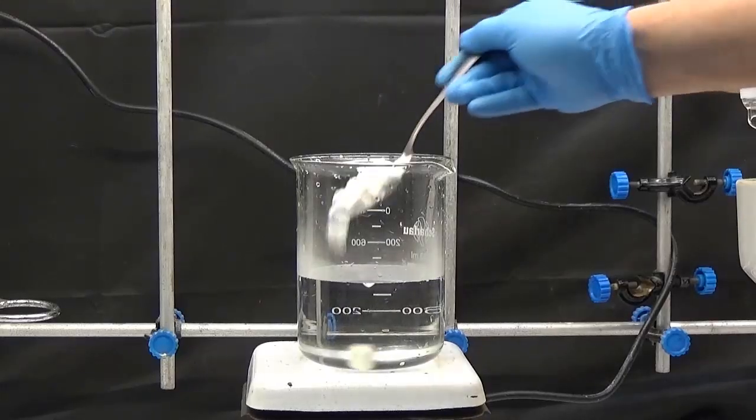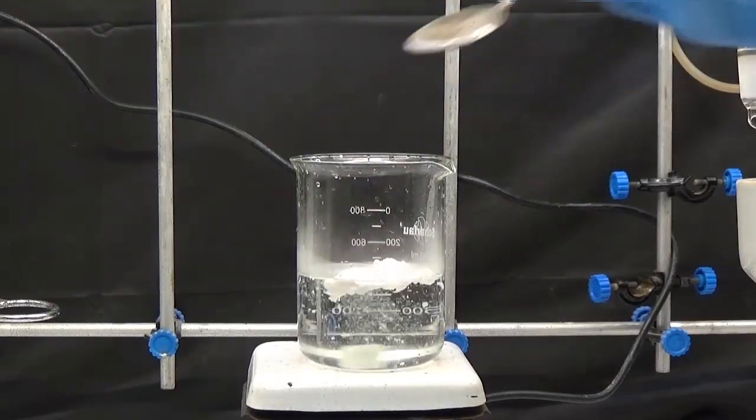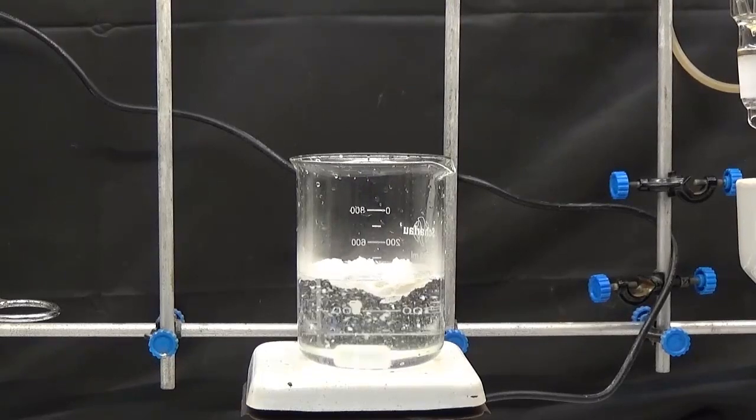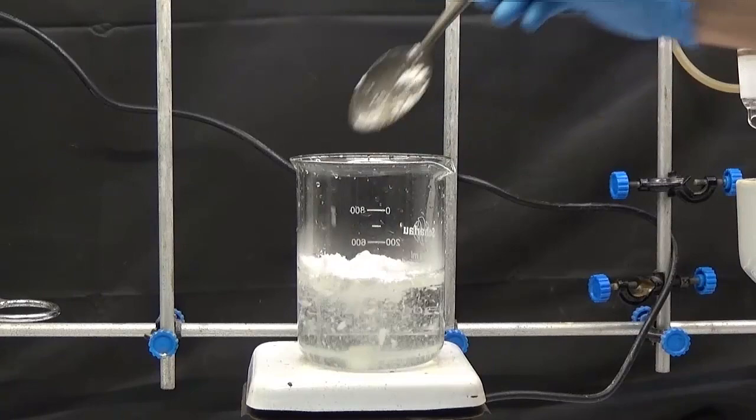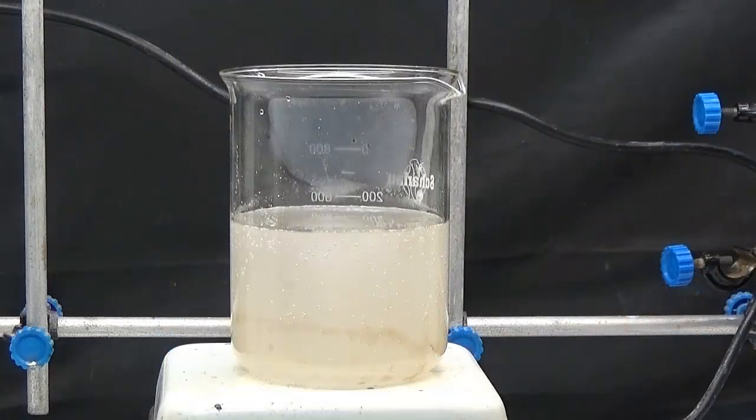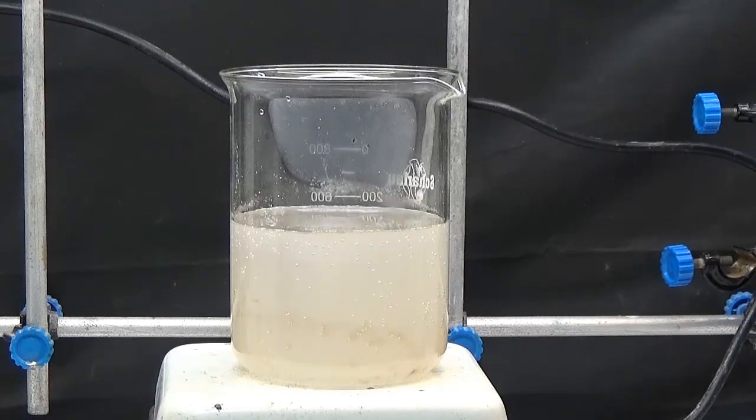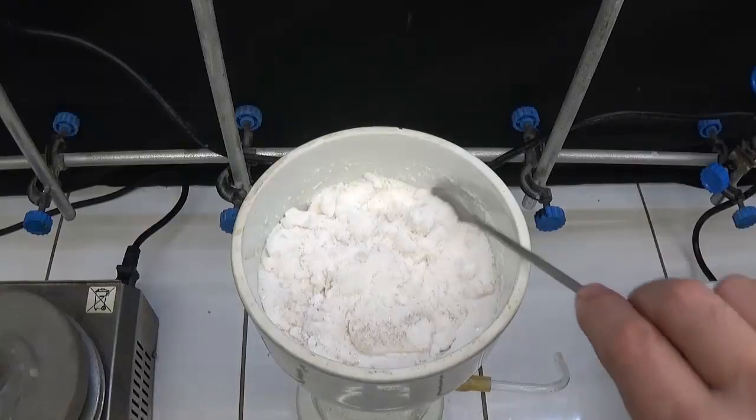To purify the acetanilide, dilute it in 500 milliliters of hot water and allow to cool for crystallization. Thicker crystals are obtained.